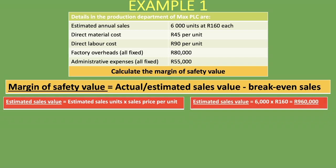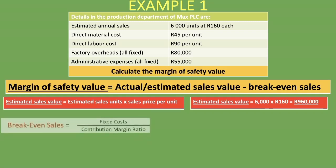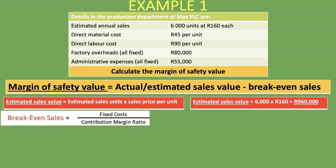Now that we have the estimated sales value, we need to calculate the break-even sales. We've done another lesson specifically on that using this same example. You take the fixed costs and divide by the contribution margin ratio. Our fixed costs are the factory overheads and administrative expenses — both all fixed — so it's 80,000 rand plus 55,000 rand that make up our fixed costs.